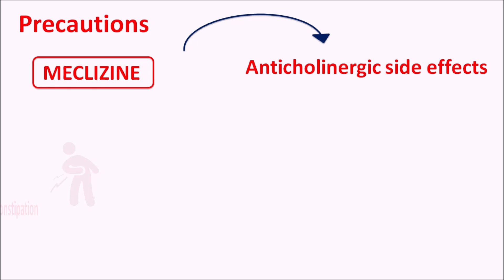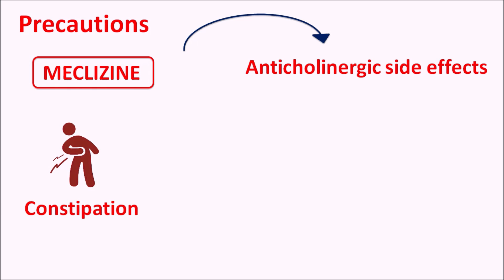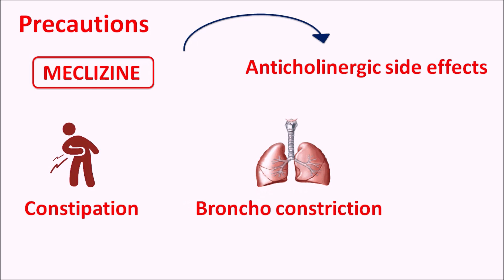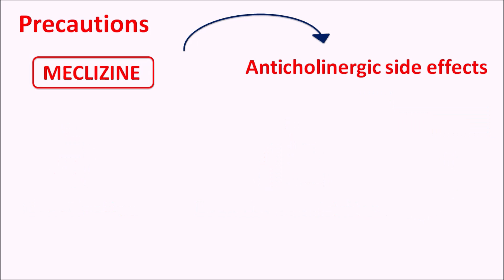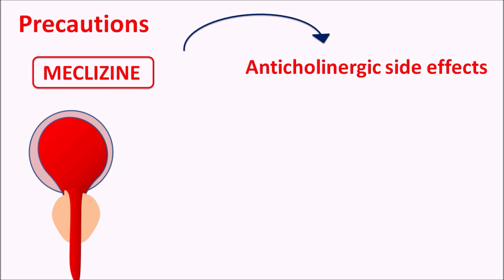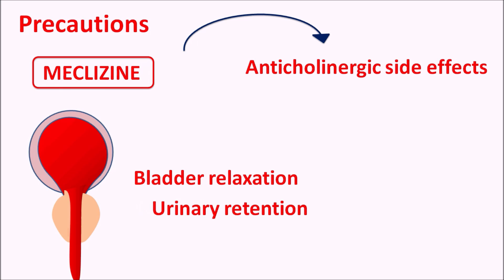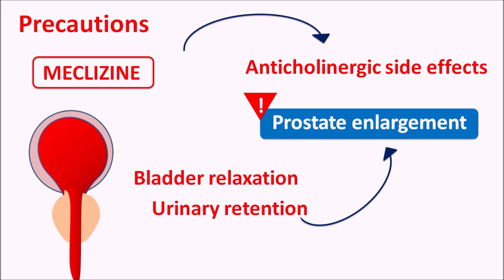This drug can also produce constipation as another anticholinergic side effect, and it can affect the respiratory system resulting in bronchoconstriction. In normal patients this is not very significant, but in patients with asthma it is more significant, so care should be taken when Meclizine is prescribed to asthmatic patients. Another anticholinergic side effect is on the bladder — this drug can produce bladder relaxation resulting in urinary retention, which is especially important in elderly patients with prostate enlargement.